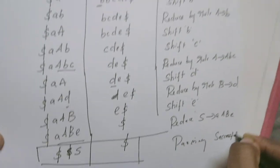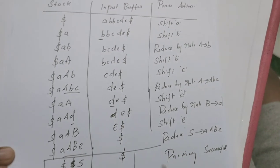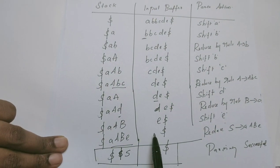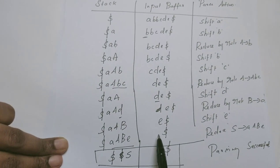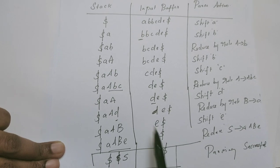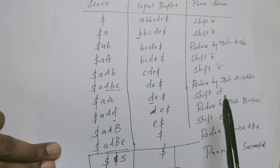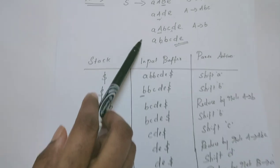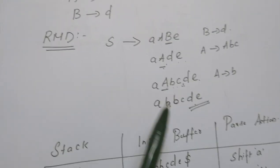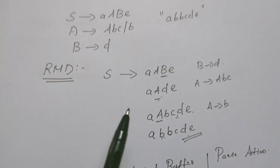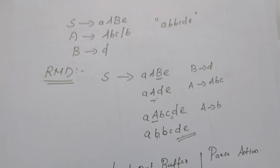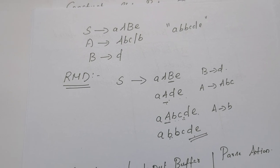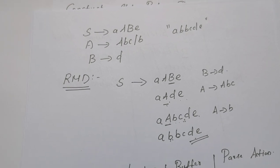I hope you understood this. When parsing a string using the shift-reduce parser, to avoid confusion while building the table, first write the RMD and follow it in reverse steps. Hope you have understood. If any doubts, please comment in the comment section. Thank you.